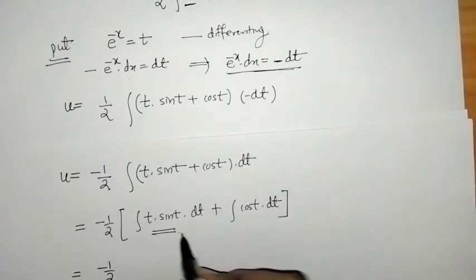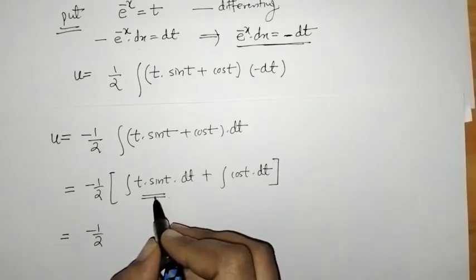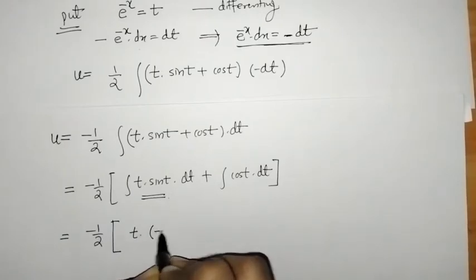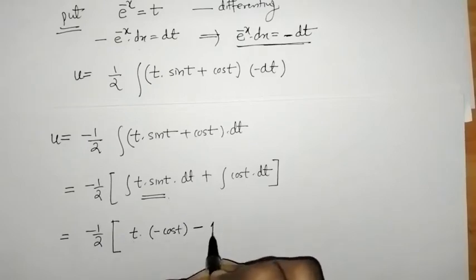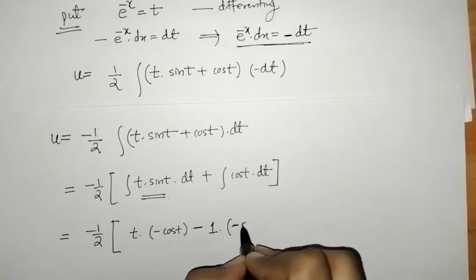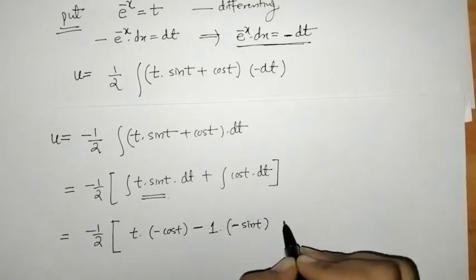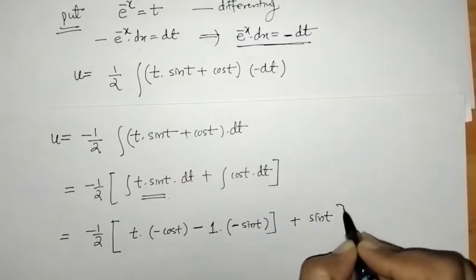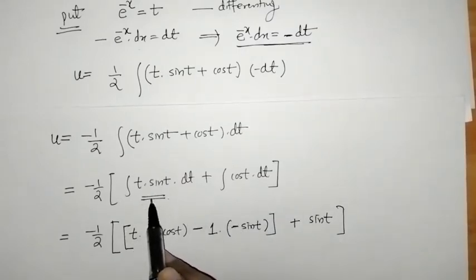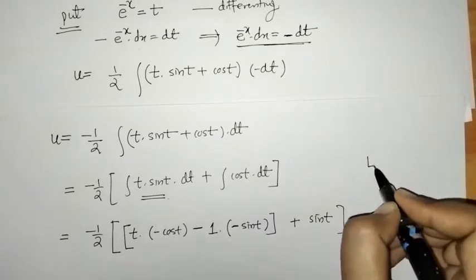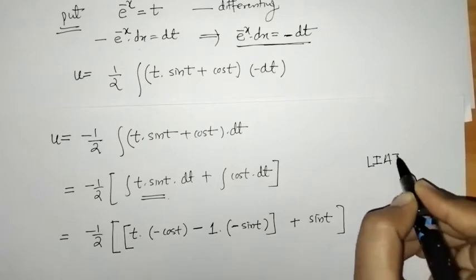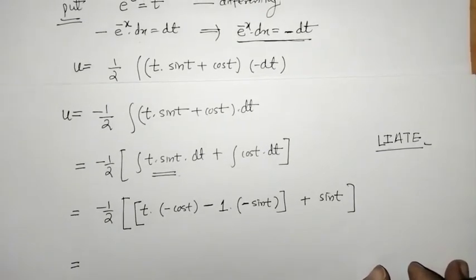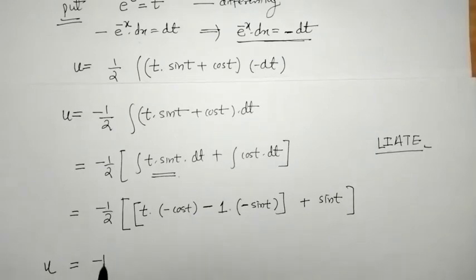We apply integration by parts using the LIATE rule, then apply the generalized rule of integration by parts. For t*sin(t): first function times integral of second gives t*(-cos(t)), minus derivative (1) times integral of (-cos(t)) which is -sin(t). The integral of cos(t) gives sin(t).